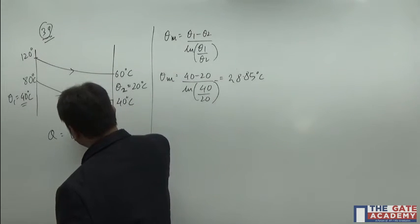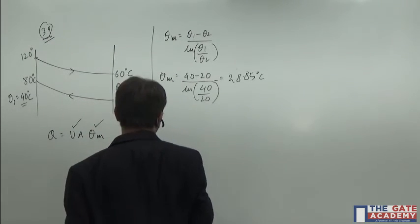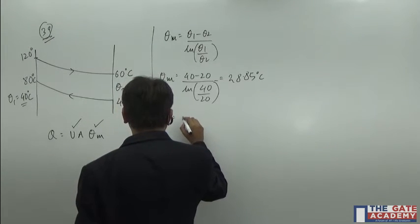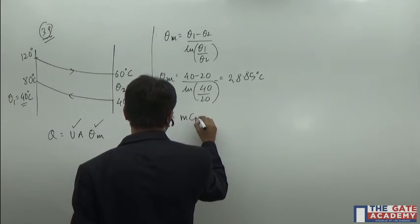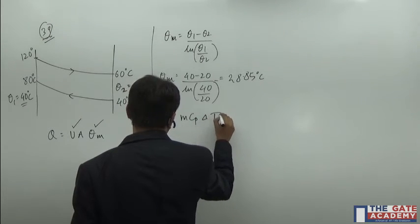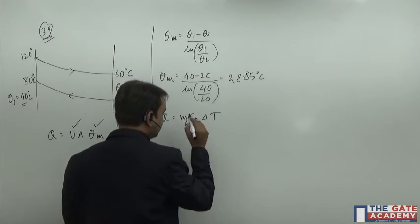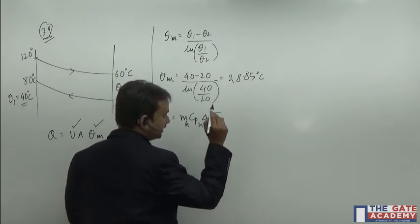Now let us find q. So this we know, this we know, and q has to be found out. Q is nothing but m cp delta t. Suppose if I am talking about the hot oil, it will be mh cph delta th.